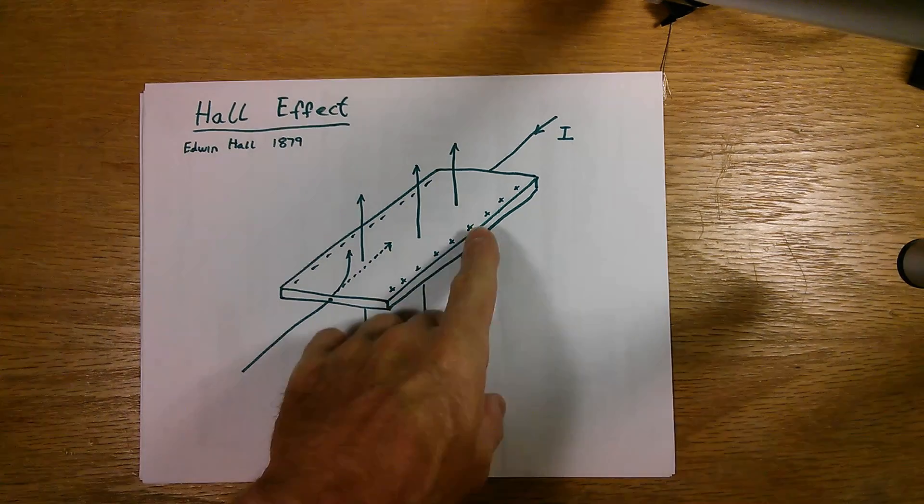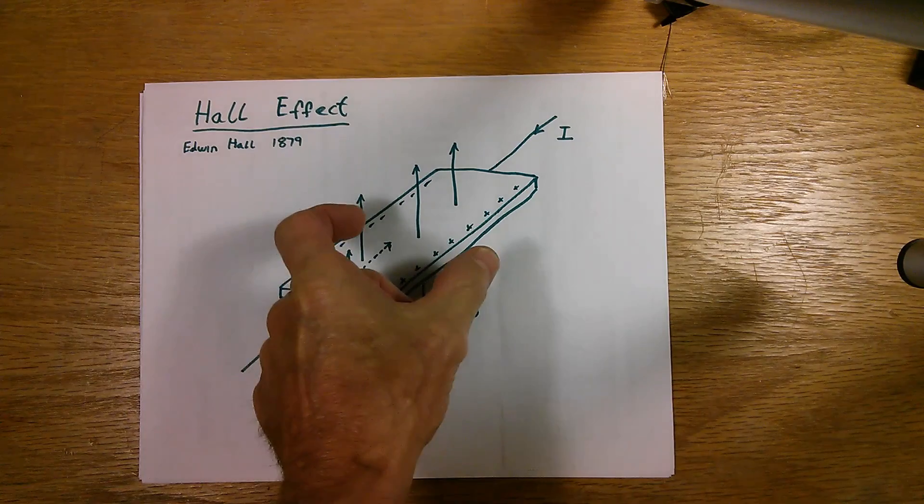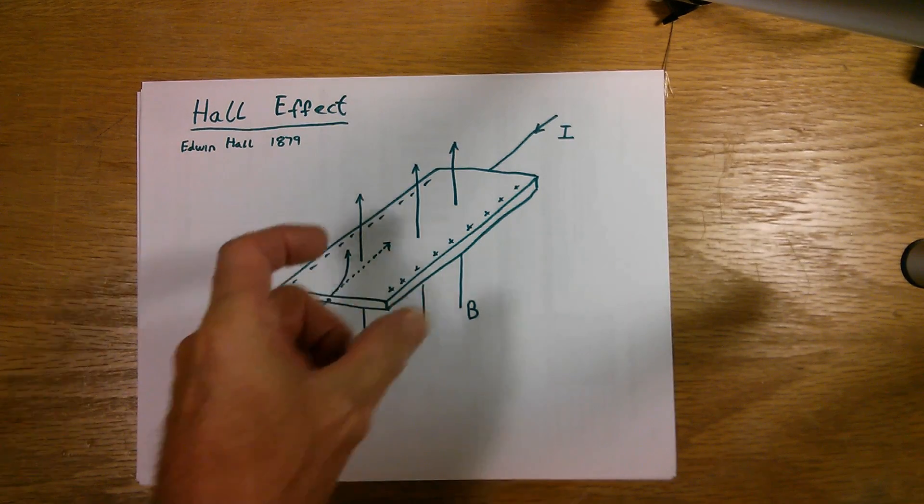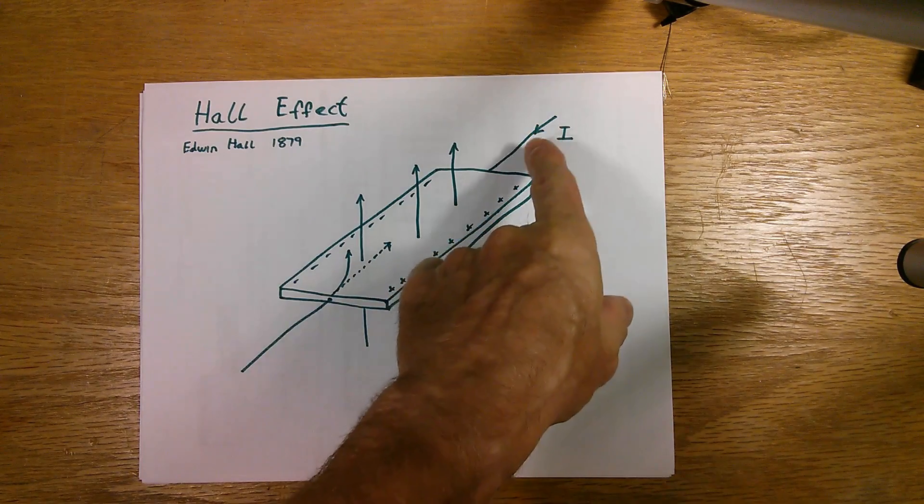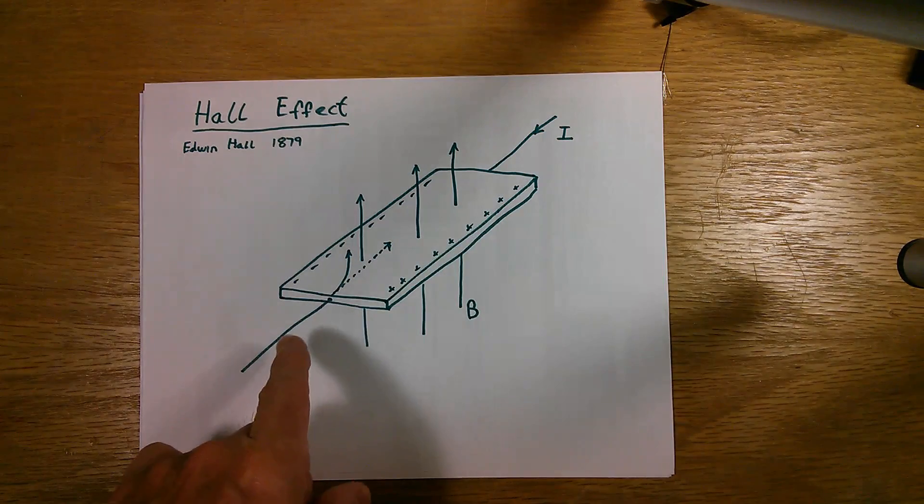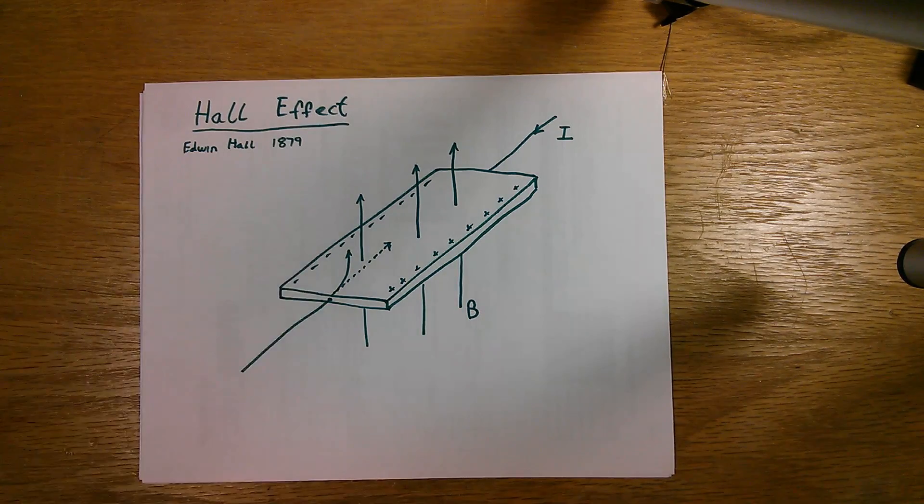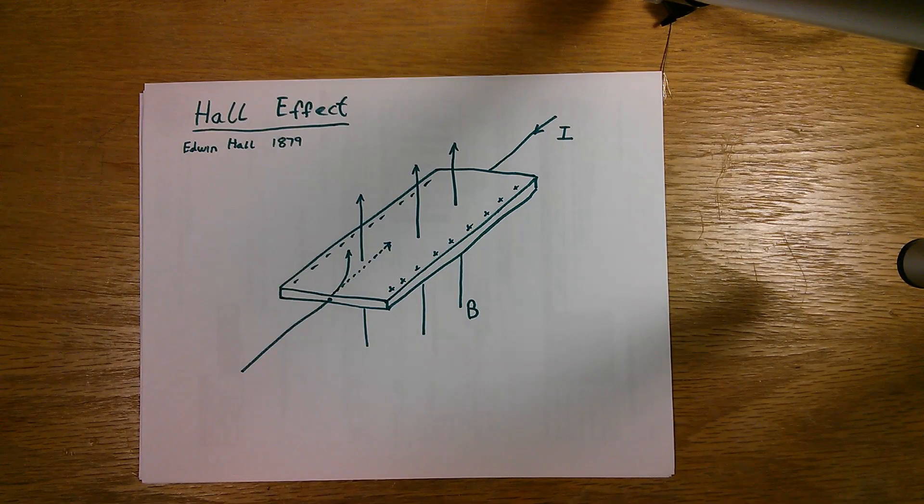And in some cases, one of the terminals on the side measuring the voltage, the effect, or the produced voltage, and one of the other terminals used for generating the biased current, will be commoned up. And that way you'll have three different terminals instead of four.